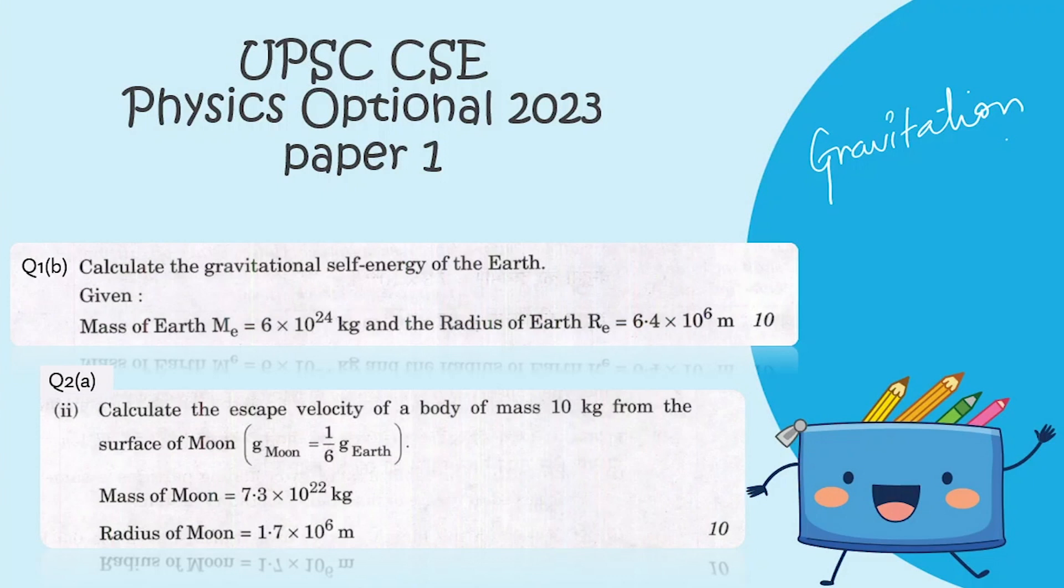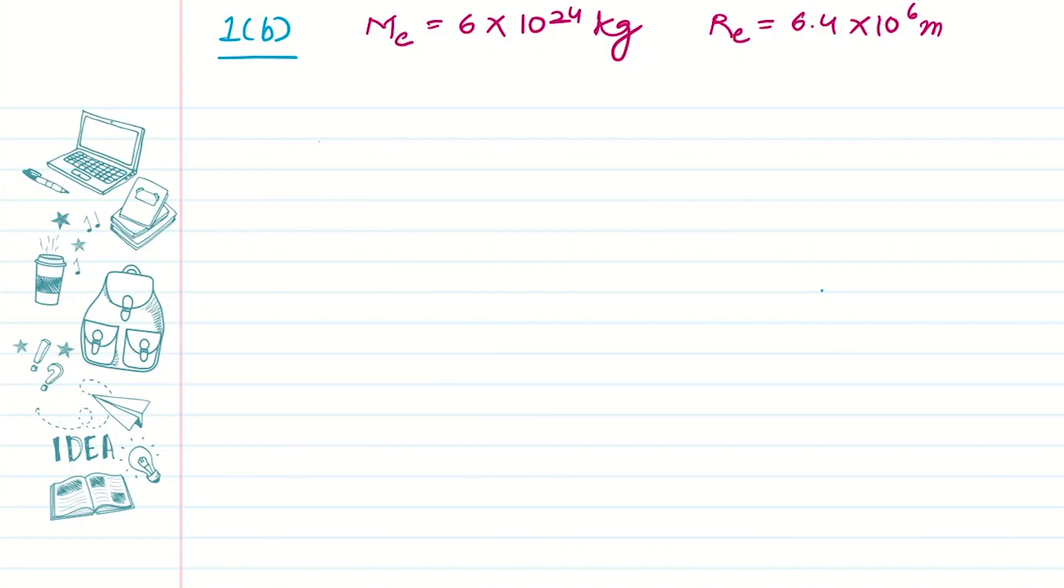Let's see the first part. In the first part, we have to calculate the gravitational self-energy of the Earth. We are given the mass and radius of the Earth. So let's start solving this. We have the mass and radius, and we know that the gravitational self-energy of the solid sphere is given by 3 over 5 times the gravitation constant into the square of mass over the radius.